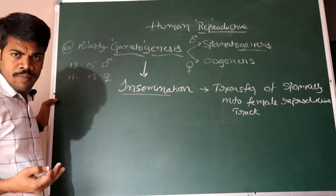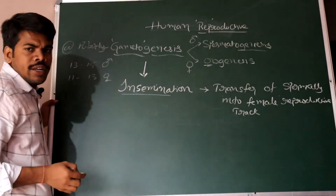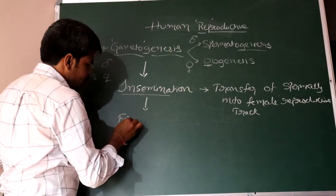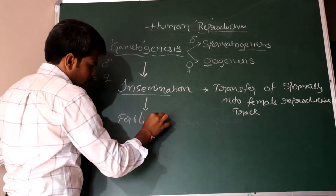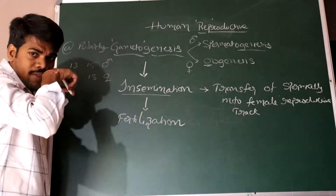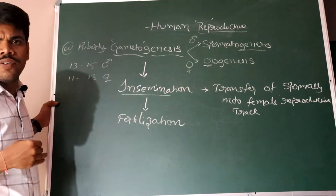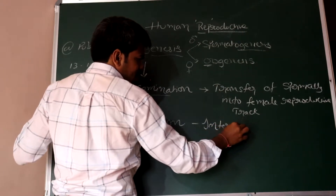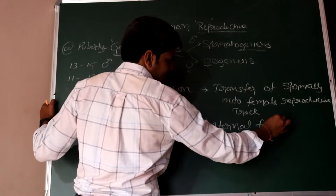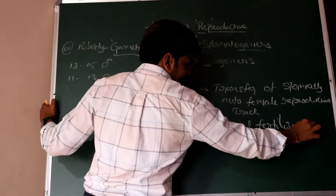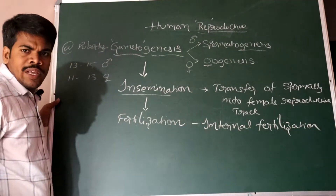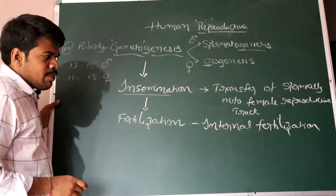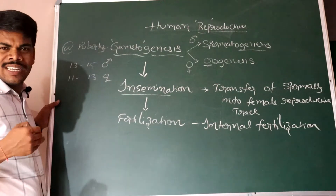The sperm cells reach the ovum, because through oogenesis the ovum is already released. The next step is fertilization. In humans, the fertilization is internal — it takes place inside the body. Some organisms like amphibians and fishes show external fertilization, but in humans we observe internal fertilization.